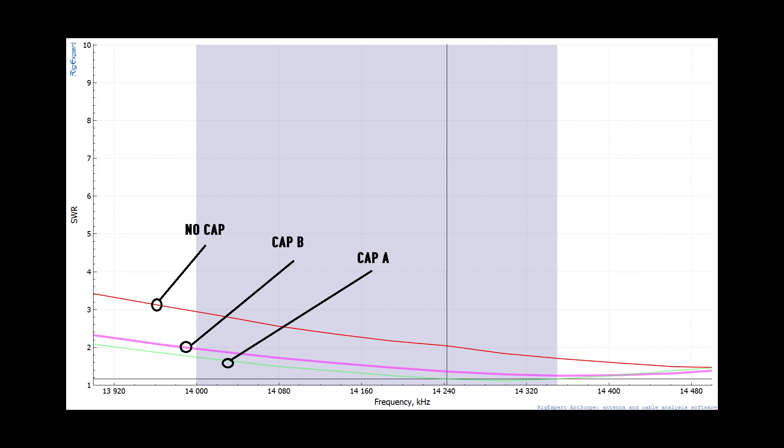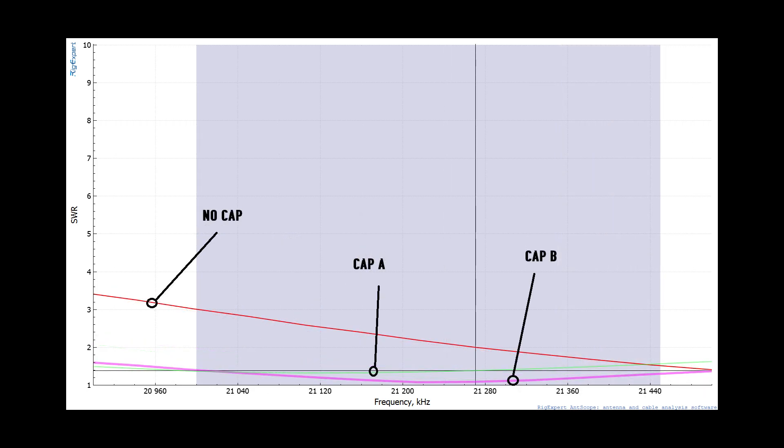Here we are looking at the 15 meter band. Again, our capacitor-equipped configurations are pretty much perfect for this band. You'll notice that capacitor B seems to have better performance than capacitor A as far as strictly looking at it from an SWR standpoint. That's what I'm talking about - that's due to loss, and we're going to talk about that once we finish doing the sweeps.